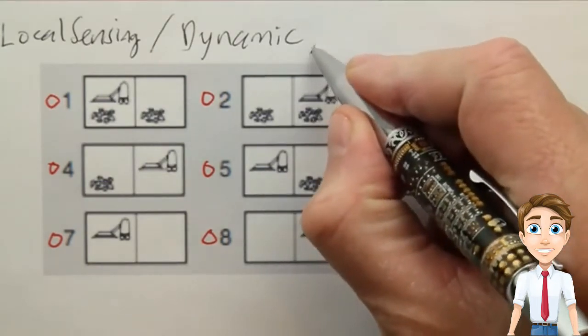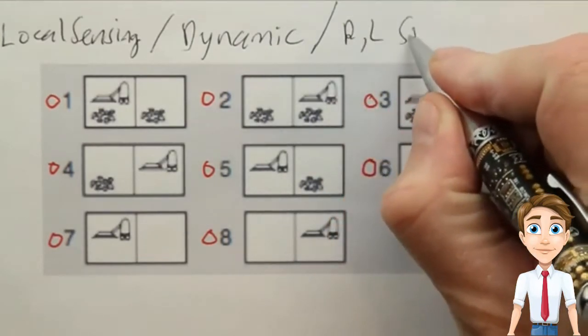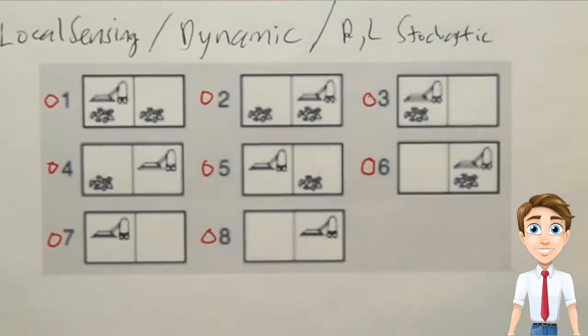And now, in addition, the right and left moves are stochastic, in that they don't always succeed. Sometimes when you try to go right, you do successfully go right, and sometimes you stay in the same location. Same for left. The suck action is always successful, it will always clean up dirt in the current location.